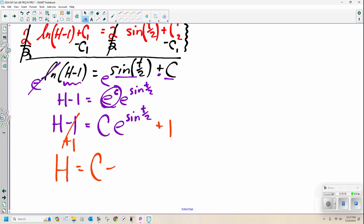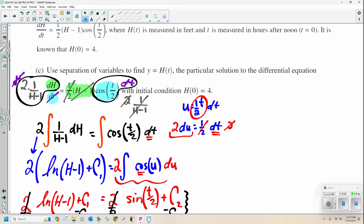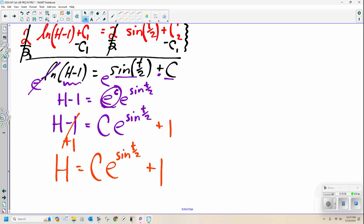So my equation, H equals some constant, E, sine of t over 2 plus 1. They give me the initial condition. When t is 0, H is 4. That's what we're going to use to find c.